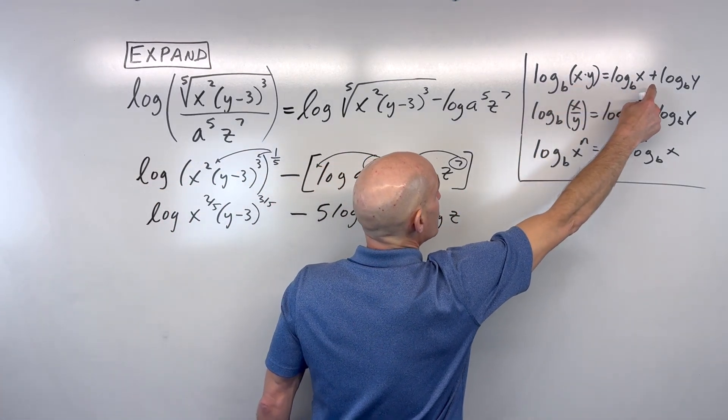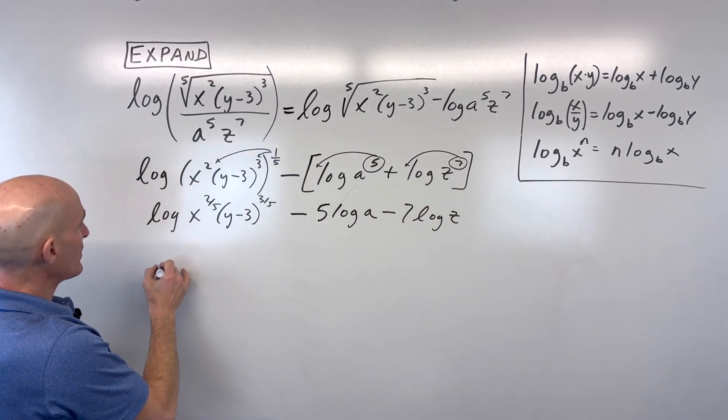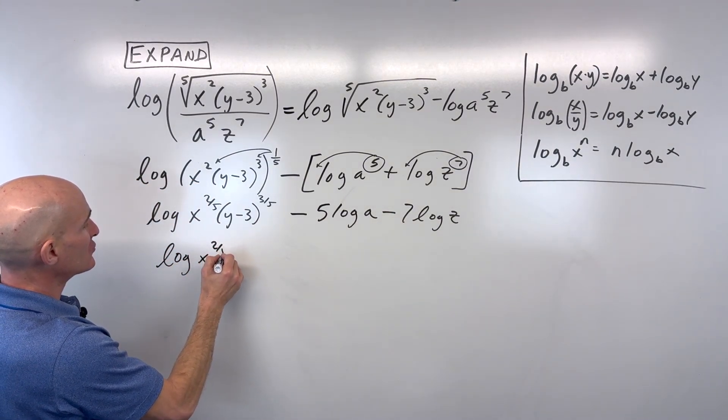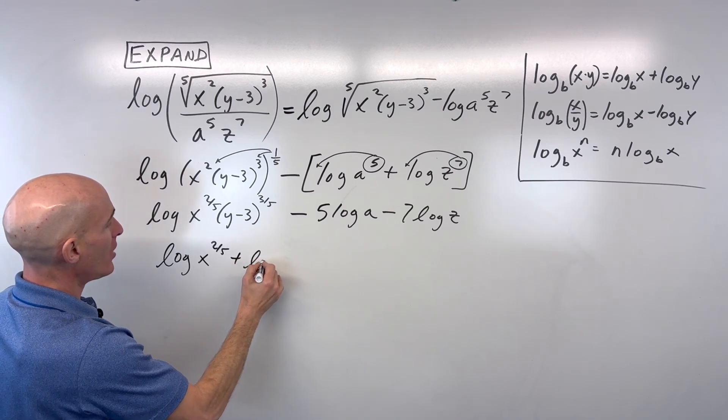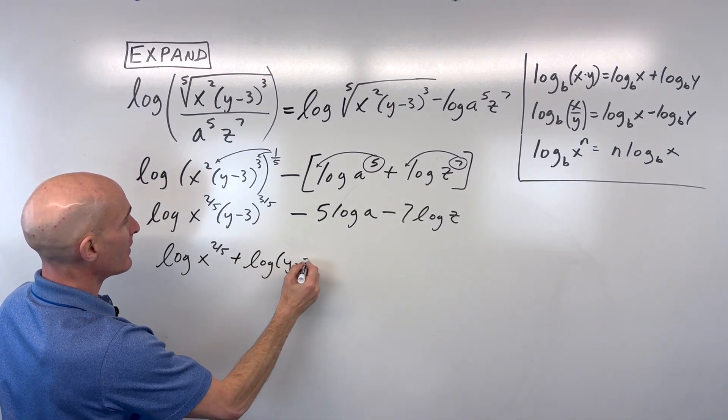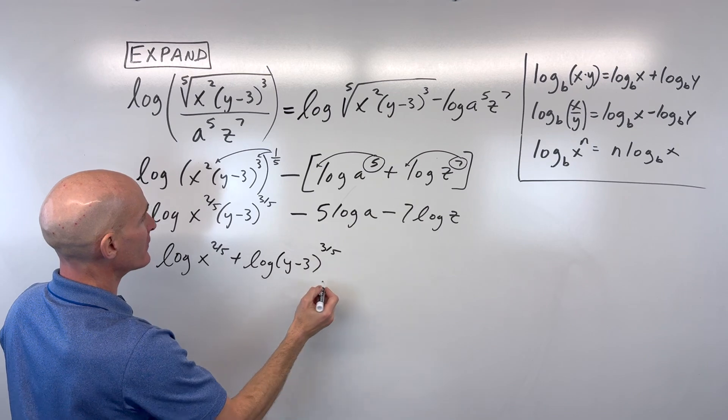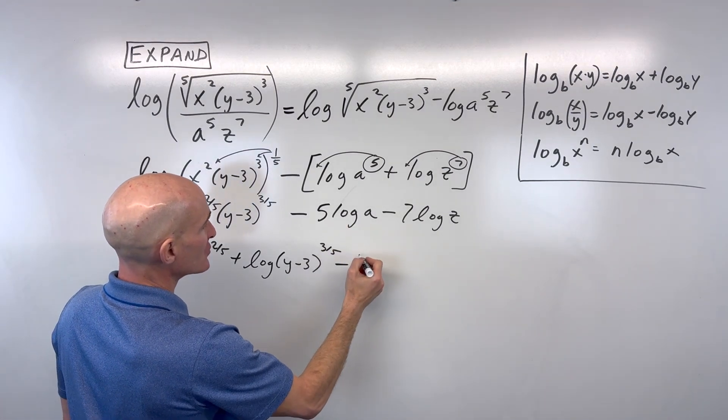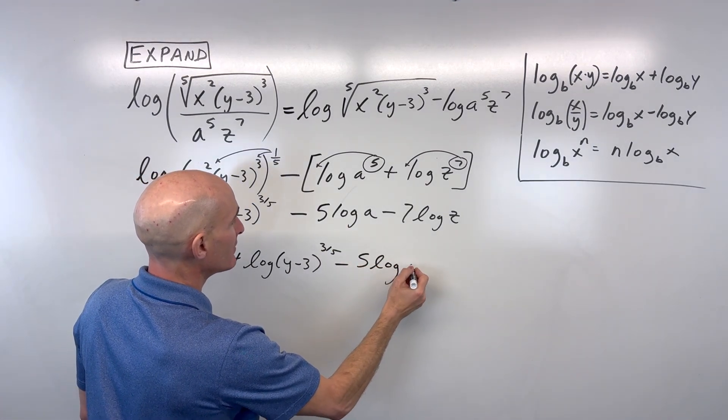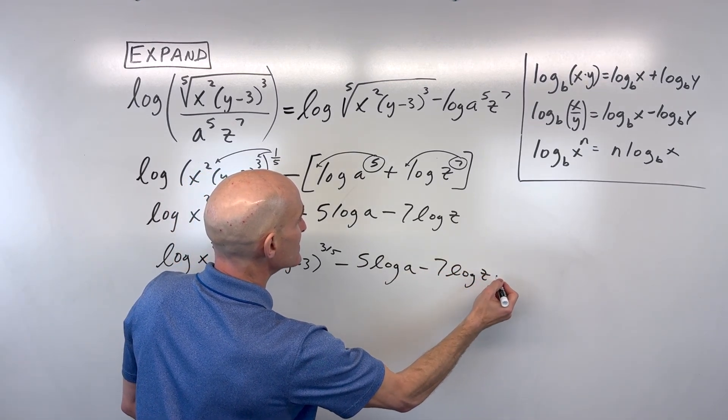That's our product property right here at the top. So we're going to write this as log of x to the two-fifths plus log of y minus 3 to the three-fifths minus, I'll just bring these guys down, we'll just take our time here, expanding, log z.